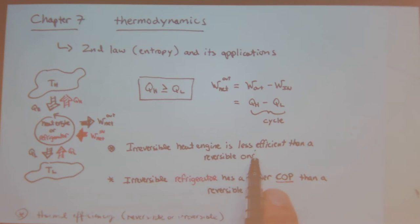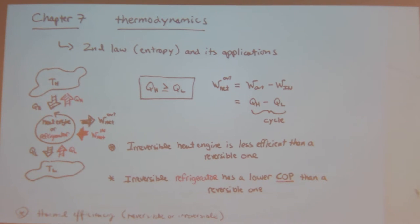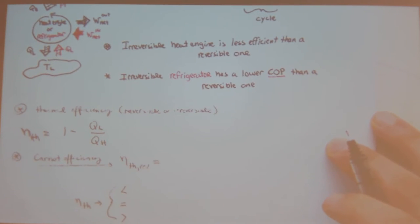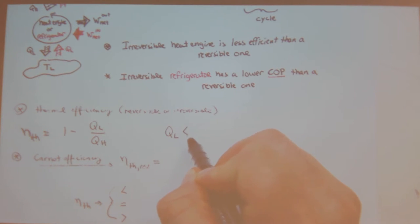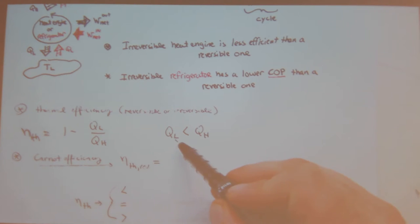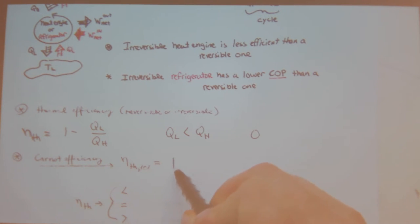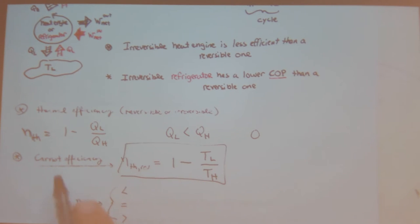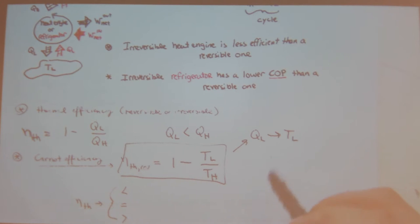For a reversible engine, an irreversible engine is less efficient, and an irreversible refrigerator has a lower coefficient of performance. Thermal efficiency is 1 minus Q_L over Q_H, and we know that Q_L has to be less than Q_H. For the Carnot efficiency of a reversible process, this becomes 1 minus T_L over T_H — Q_L can be transformed to T_L and Q_H to T_H.